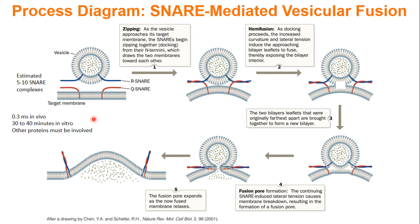In vivo this process takes 0.3 milliseconds, while in vitro it takes roughly half an hour. Therefore SNAREs can't be the only proteins involved — there must be other proteins that we're still trying to understand. But this is basically what is happening with the SNARE proteins.